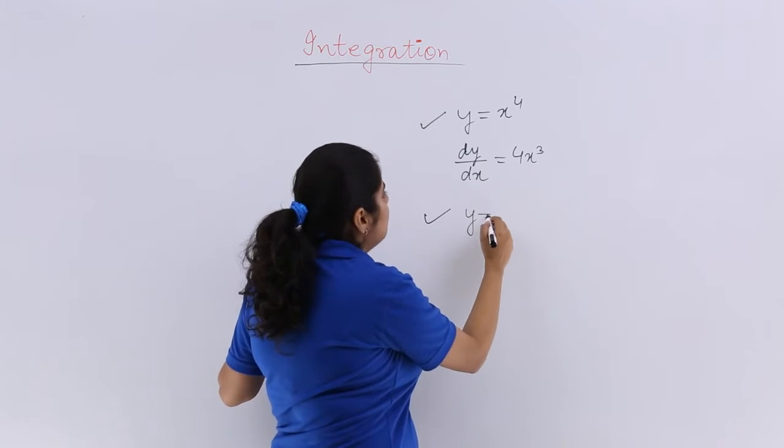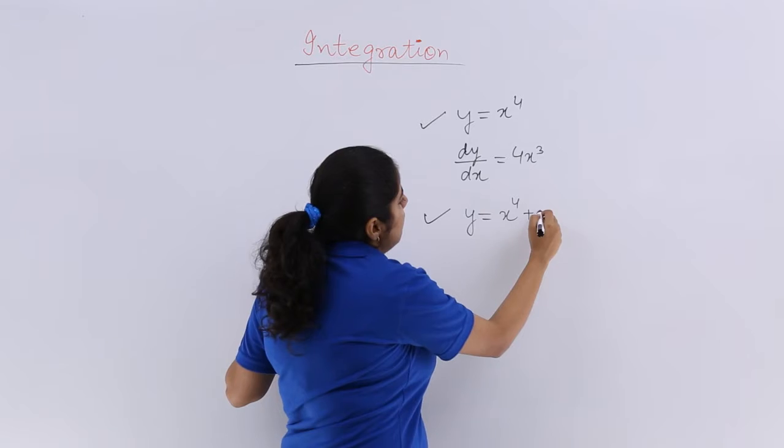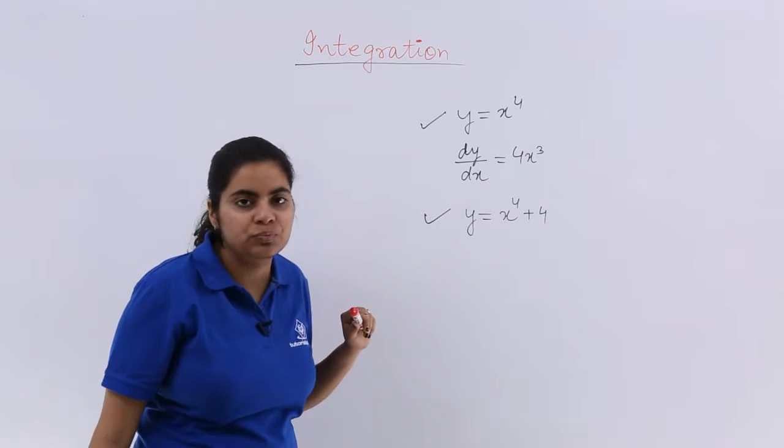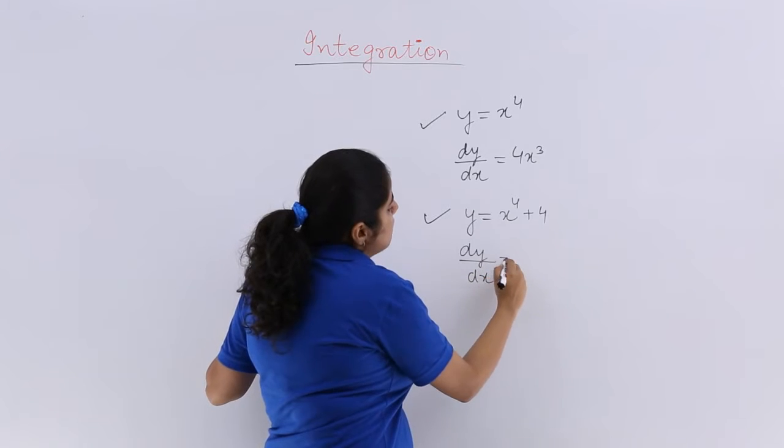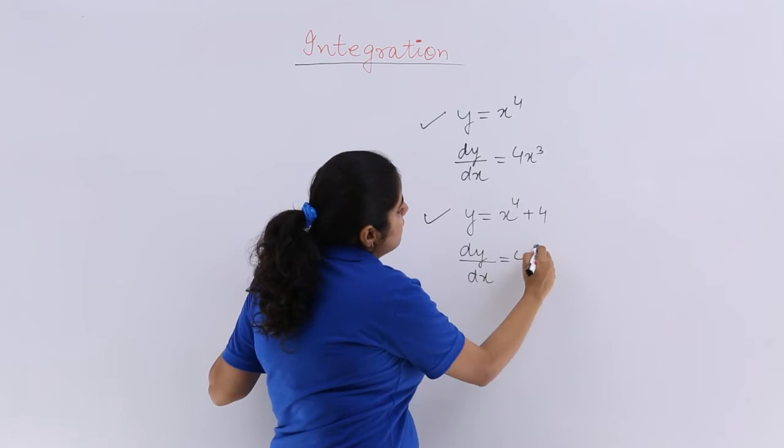Next example that I take, again I have a function y, this time it is x power 4 plus 4. What is dy by dx? My dy by dx is equal to 4x cube.